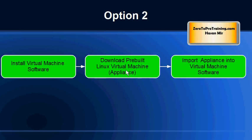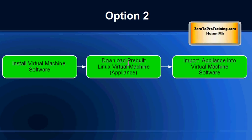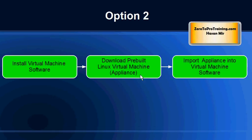We're going to take an easy path, which is option two. We want to learn Linux and have access to the Linux operating system with as little effort as possible. So we install the virtual machine software, and then instead of downloading Linux DVD files, we download the virtual machine itself — a machine that somebody else created, installed Linux on, and then exported as a file. We can download this machine as a file, also known as an appliance.